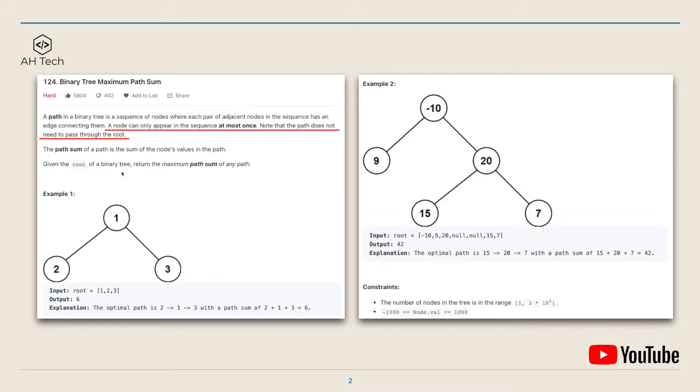So we are given the root of this binary tree and we have to return the maximum path sum of any path. In example one, this binary tree has three nodes with values one, two, three, and the optimal path will be the sum of all the values, one plus two plus three, which is six. And in example two, the optimal path sum will be the right subtree: 15 plus 20 plus 7, which is 42.